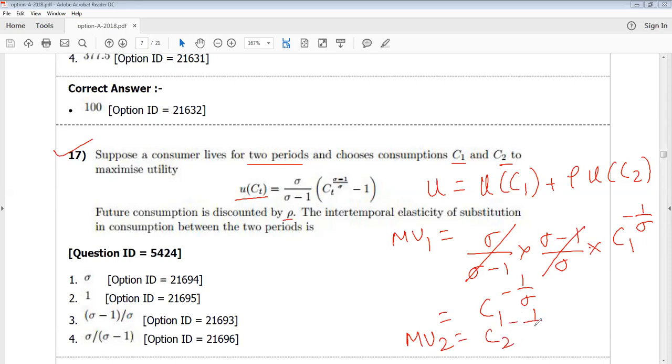Similarly, MU2 will be C2 to the power minus 1 by sigma. Am I right? But I have a rho here, so it will be...